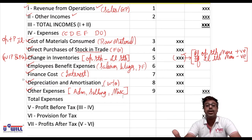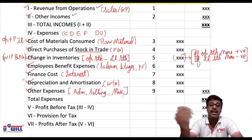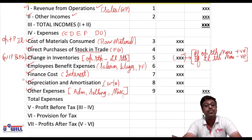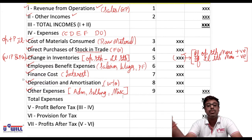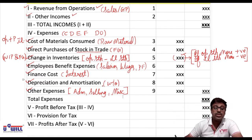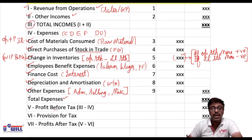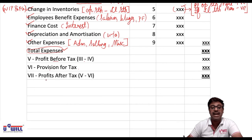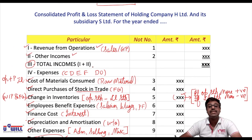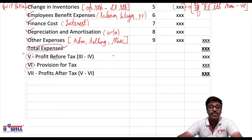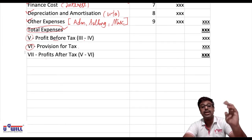Only two incomes: revenue from operations and other incomes. Then expenses C D E F Do: C - cost of material consumed and change in inventories, D - direct purchases, E - employees benefit expenses, F - finance cost, Do - depreciation and amortization and other expenses. Total income minus total expenses gives profit before tax; subtract provision for tax to get profit after tax.